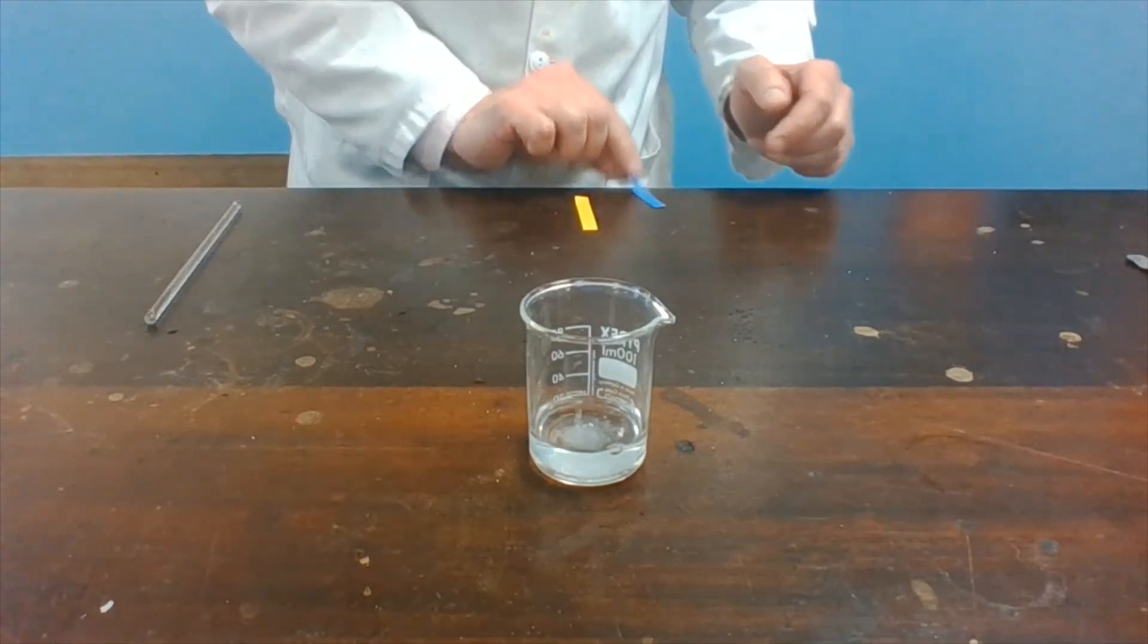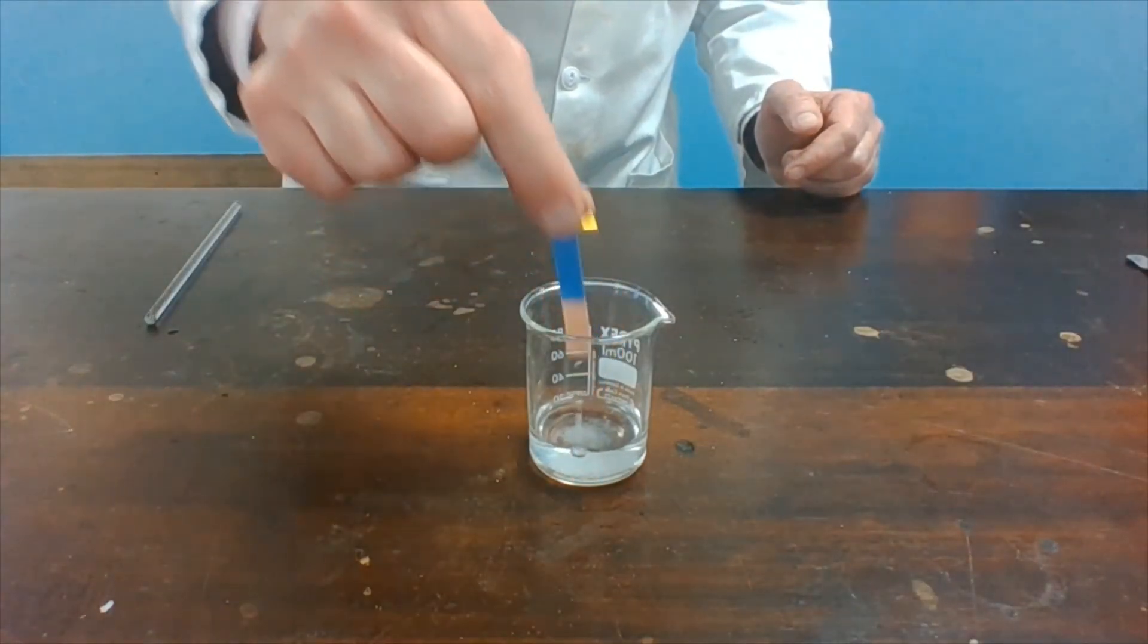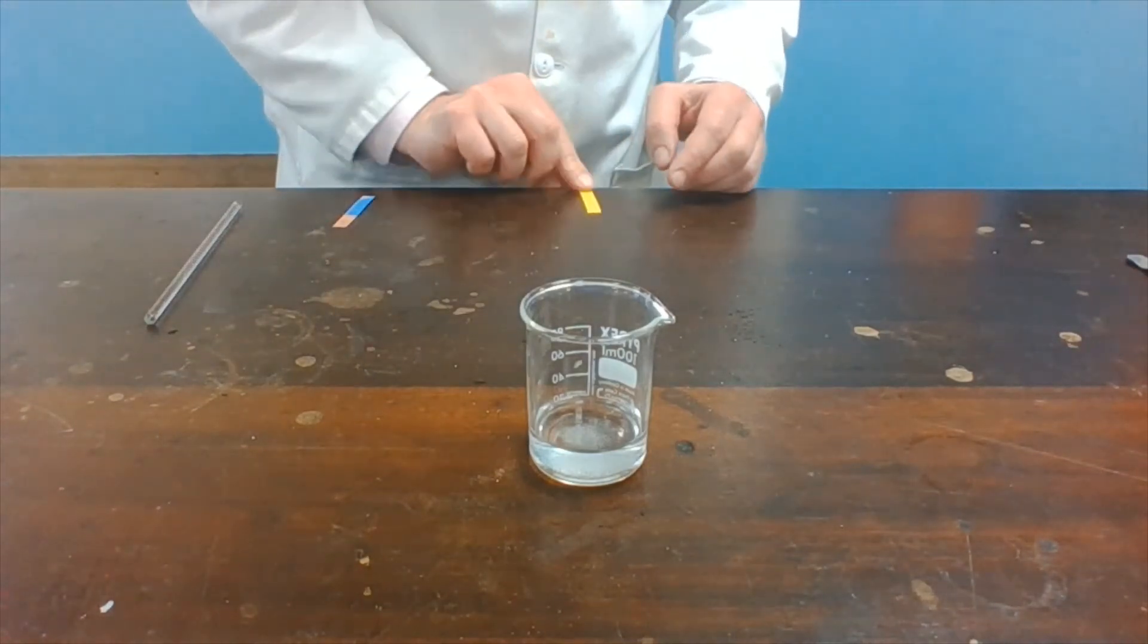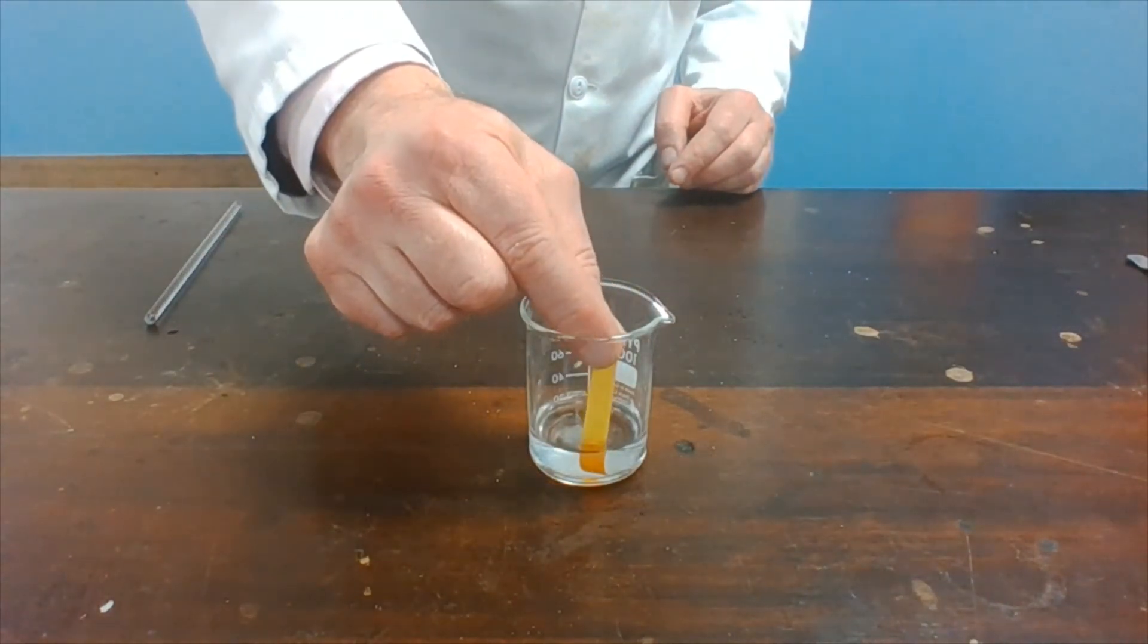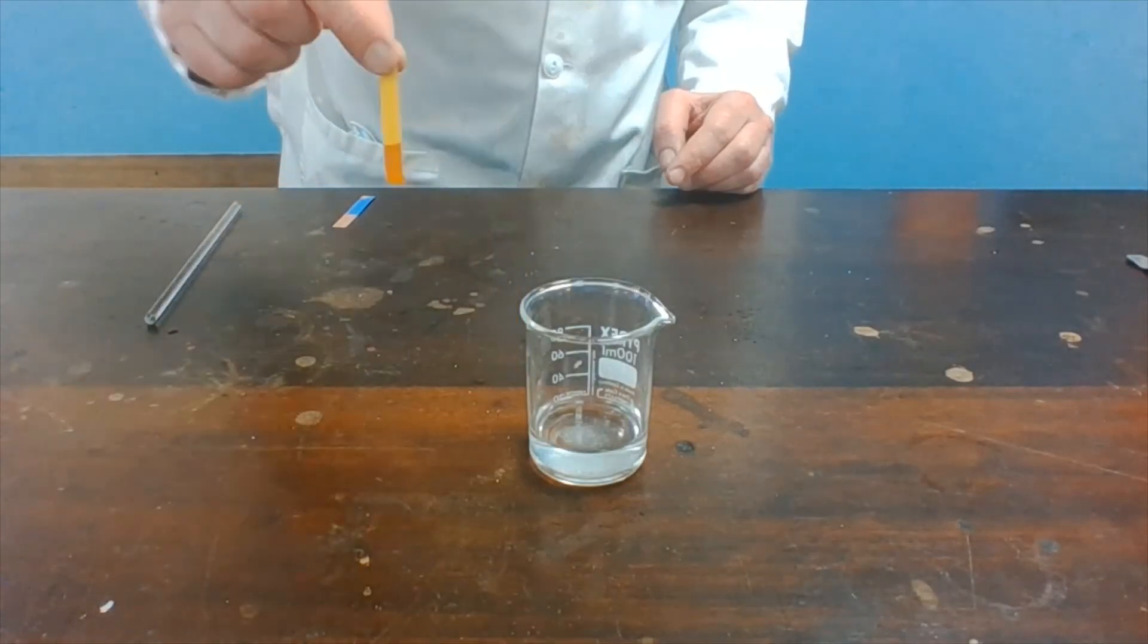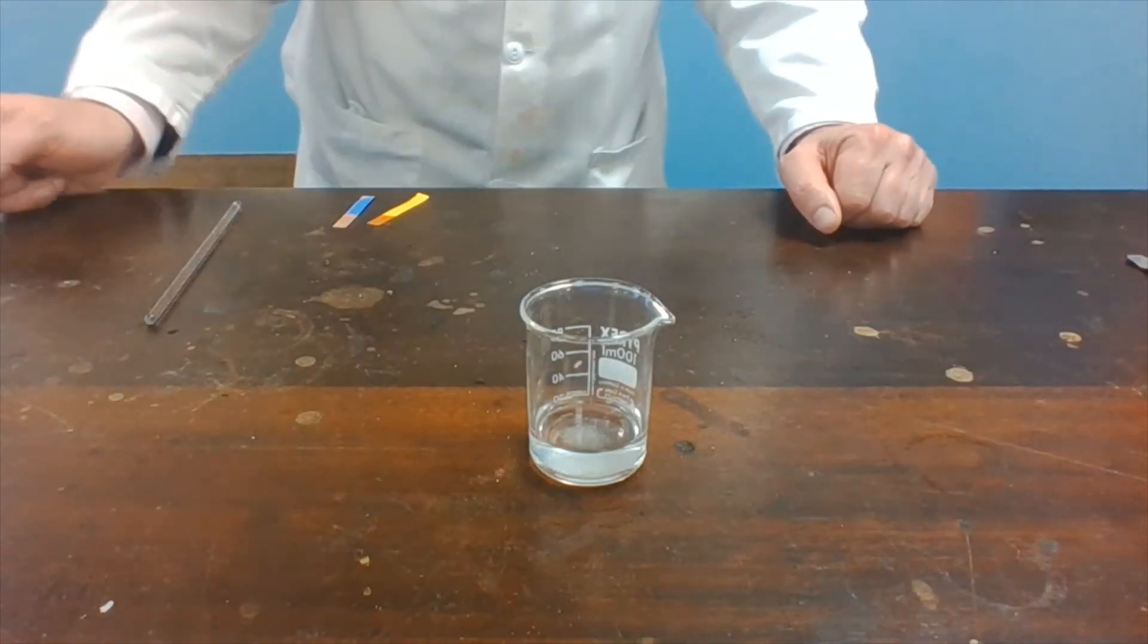And then test it with the indicator paper. You will see that the blue litmus paper turns red. And the universal paper turns orange. So the solution is now acidic.